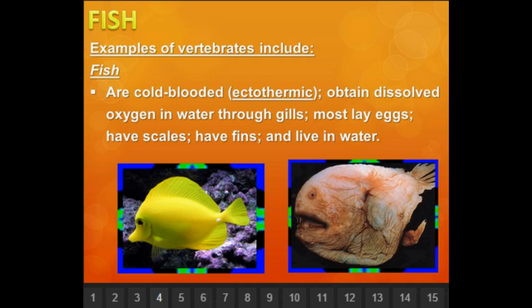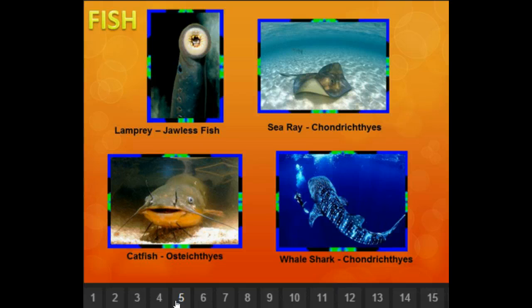Fish are the first example of vertebrates. Fish are cold-blooded, meaning ectothermic — they get their heat from outside their body. They obtain dissolved oxygen from water through their gills, most lay eggs, and they have scales, fins, and live in water. Students sometimes forget fish are vertebrates, but if you order a whole fish at a restaurant, you pick the meat off the bone — therefore they have bones. Examples include the lamprey, catfish, sea ray, and white shark, which are either non-cartilaginous or cartilaginous fish.